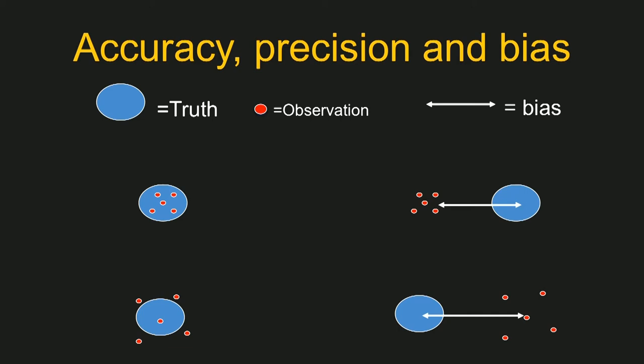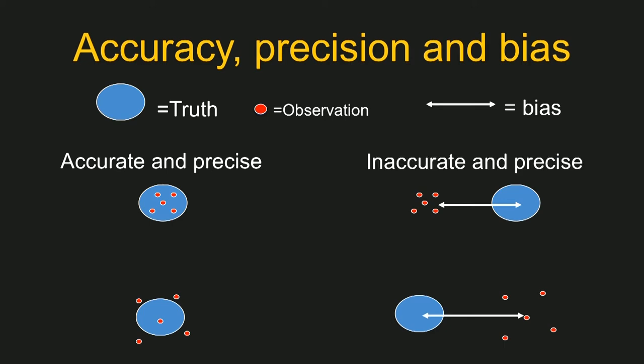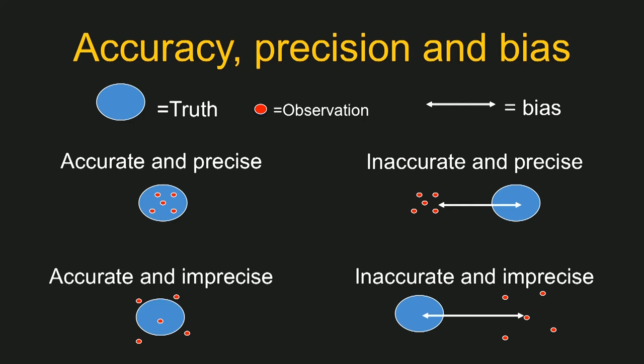The following schematic is intended to help you understand these terms and their relationship to each other. Observations are precise and accurate if they are closely clustered and overlap the truth. Observations are inaccurate but precise if they are closely clustered but don't approximate the truth. They can be accurate and imprecise when they overlap the truth but are not closely clustered. And they can be both inaccurate and imprecise. Clearly, a key goal must be to eliminate bias and improve precision.